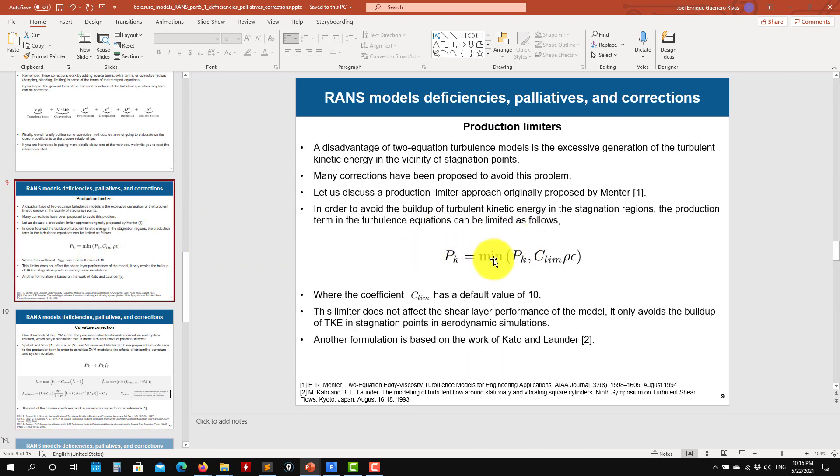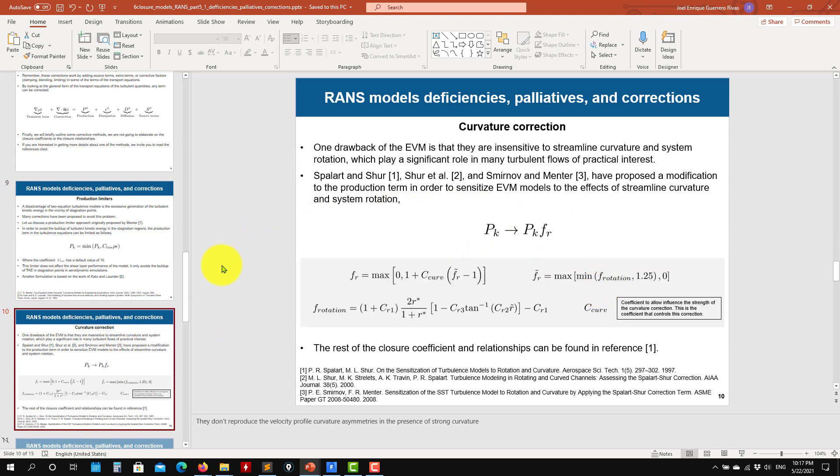So the production limiter is doing this one. You put this limiter here. This is the coefficient. And it's doing some clipping. In the curvature correction, basically a little bit in short is doing this.